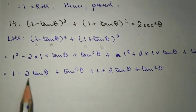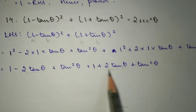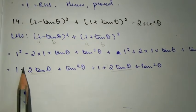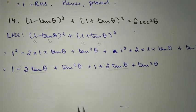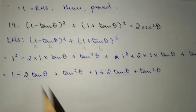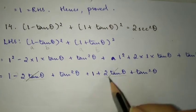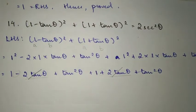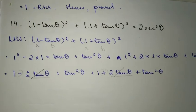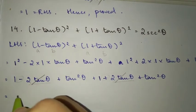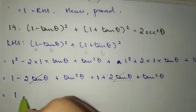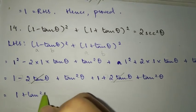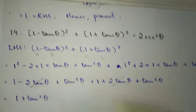Now 2 tan theta and minus 2 tan theta have opposite signs, so they cancel each other. That leaves us with 1 plus 1 plus tan square theta plus tan square theta, which gives 2 plus 2 tan square theta.